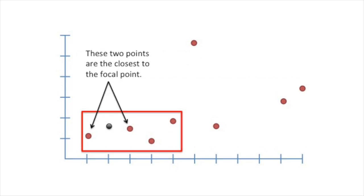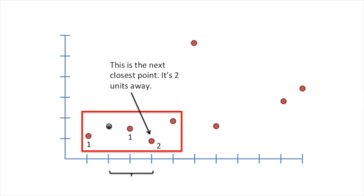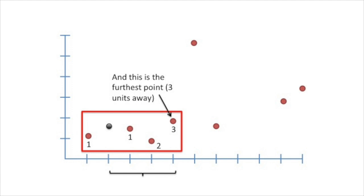These two points are the closest to the focal point. They are both one unit away on the x-axis. This is the next closest point. It's two units away. And this is the furthest point, three units away. So we take the four points that are closest to the focal point, even if that means the window stays in the exact same place as before.